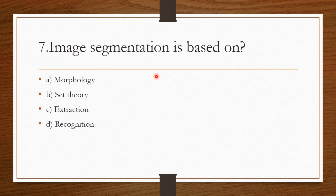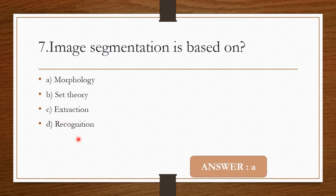Question 6: Image segmentation is based on — Option A: Morphology. Option B: Set theory. Option C: Extraction. Option D: Recognition. Image segmentation is based on morphology, so Option A is the correct answer.